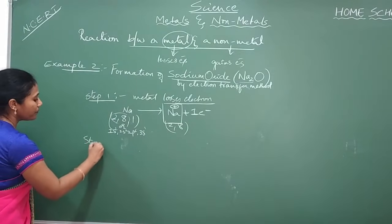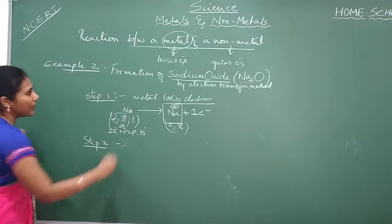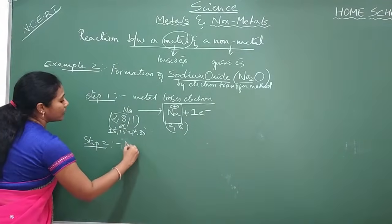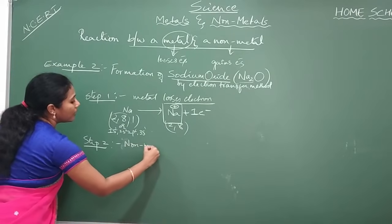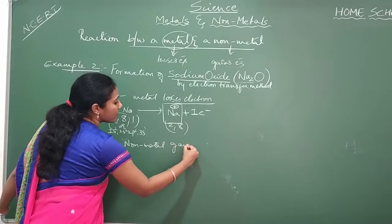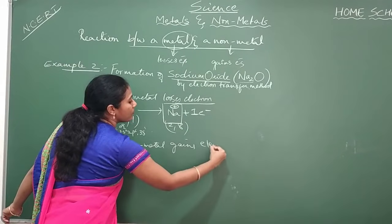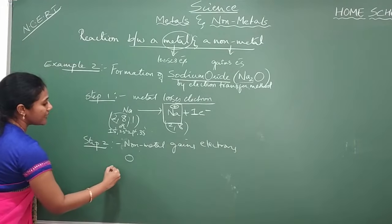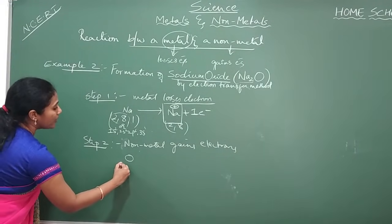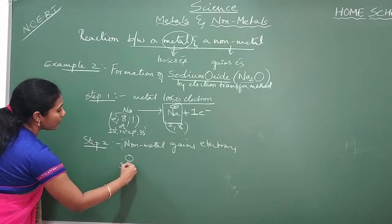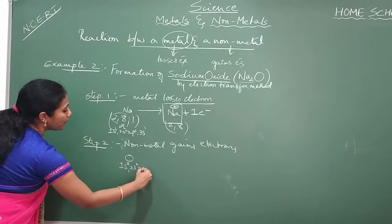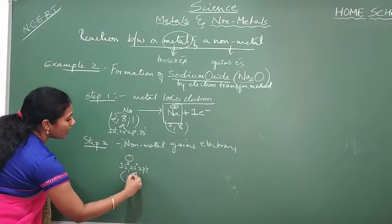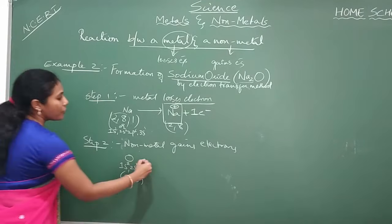Step number 2 — who is a non-metal? Oxygen is a non-metal. Non-metal always gains electrons. So oxygen's electronic configuration — atomic number 8 — is 1s², 2s², 2p⁴, or you can also write 2, 6.